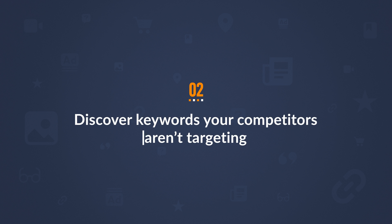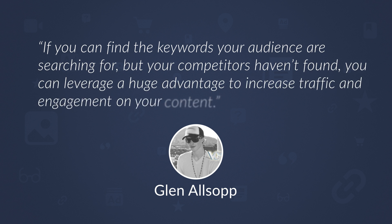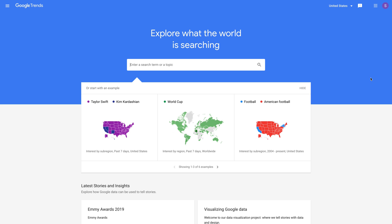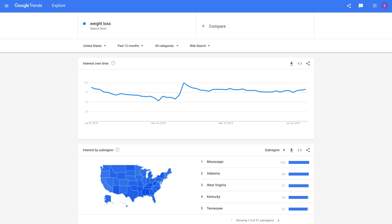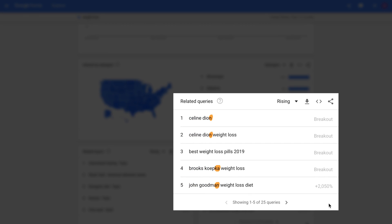The next tip is to discover keywords your competitors aren't targeting. In the words of Glenn Alsop, if you can find the keywords your audience are searching for but your competitors haven't found, you can leverage a huge advantage to increase traffic and engagement on your content. The good news is that you can find these keywords your direct competitors aren't targeting. The bad news is there isn't a cookie-cutter formula — it requires a bit of creativity. Here are a couple of ways to find out-of-the-box keyword ideas. The first way is to look at Google Trends for standout keywords. So let's say we're in the ultra-competitive weight loss niche. I'll run that search in Trends and scroll down to the related queries. Looking at the results, you'll immediately see something interesting — celebrity names. And if we go to the next page, you'll see even more.